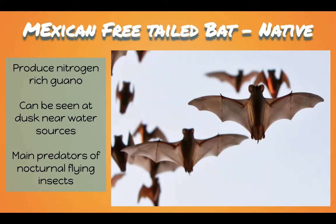The Mexican free-tailed bat is important because they produce nitrogen-rich guano — guano is just a fancy scientific term for bat poop — and that guano is important for amending soil and can be used commercially as fertilizer. To see these bats, you can find them at dusk near water sources. There's a famous bat bridge in Austin, Texas where tons of people come to view the bats come out at dusk. They are also important because they are predators of nocturnal flying insects, meaning they eat mosquitoes and pests that damage crops for farmers.